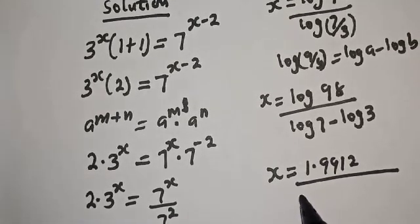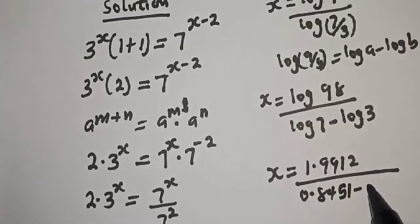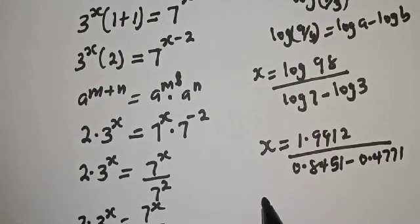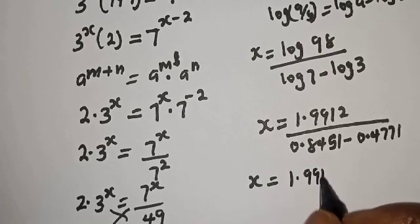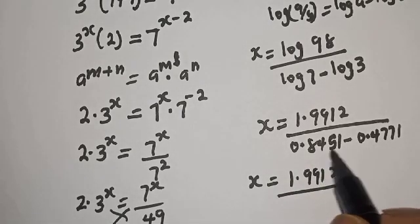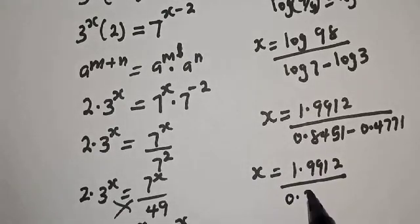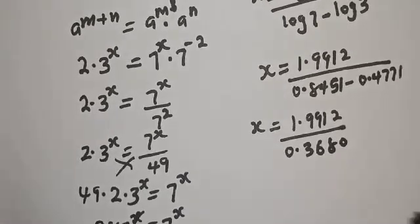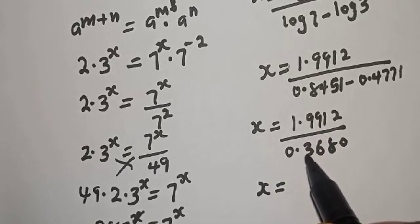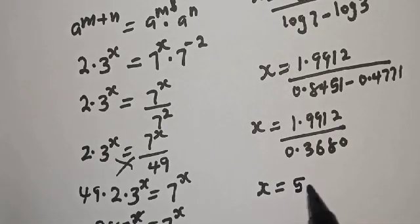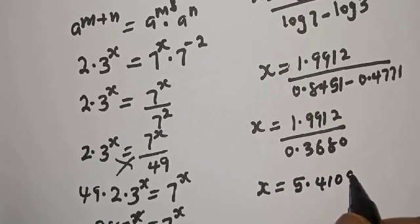Log 7 is 0.8451 and log 3 is 0.4771. Then s is equal to 1.9912 over 0.3680, which gives s equal to 5.4109. And this is the final answer.